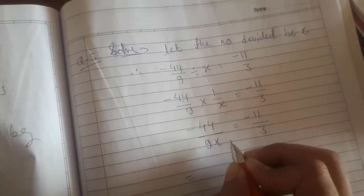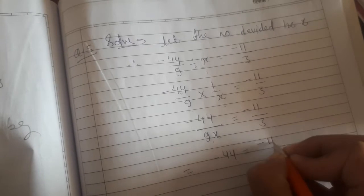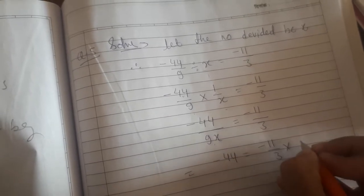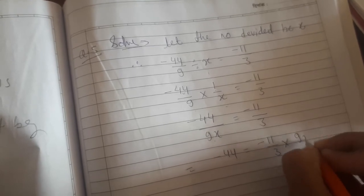9x is in the denominator, we'll transfer it, so it comes to multiply. So -44 equals -11/3 times 9x. Transfer from divide to multiply, it's converted.